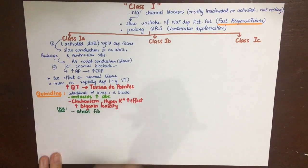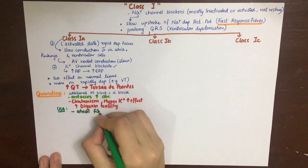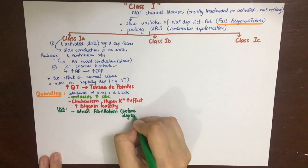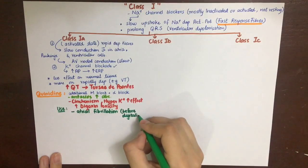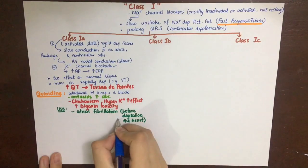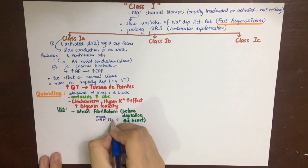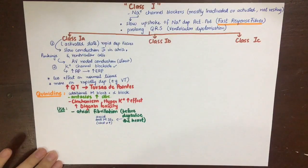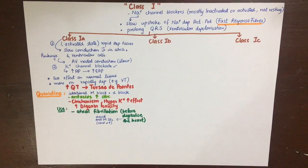For atrial fibrillation, the heart should first be digitalized — that is, we first give digoxin before giving quinidine. Digoxin slows AV nodal conduction, and because quinidine has anti-muscarinic properties it will increase AV nodal conduction. If AV nodal conduction is increased without first administering digoxin, the atrial fibrillation can be transmitted to the ventricles, potentially leading to ventricular tachycardia or arrhythmia. So to avoid that, we first need to digitalize the heart.